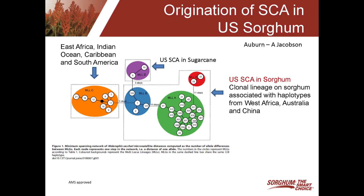There's also a third biotype that you find in East Africa, the Indian Ocean area, and the Caribbean and South America. What I think is important is that when we've looked at the sugarcane aphid across the U.S., it's the same biotype whether that's in Texas or Florida. So from a management standpoint, what we do to control the aphid should be somewhat similar.